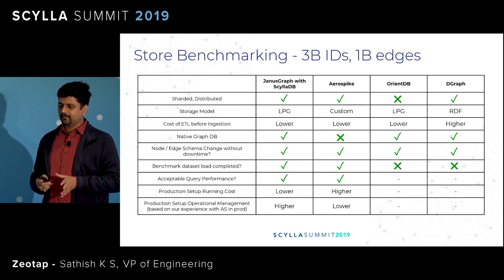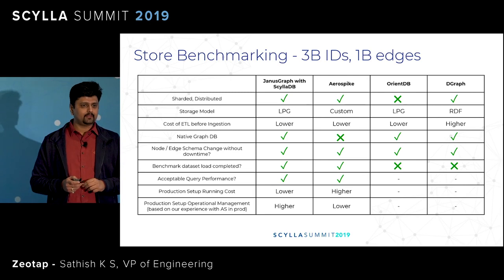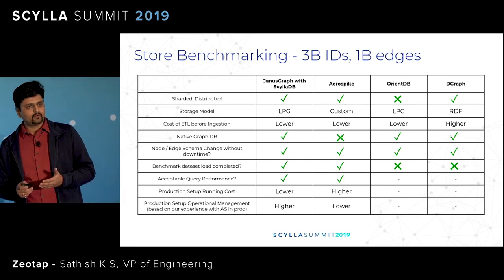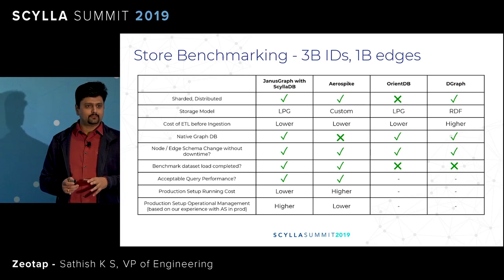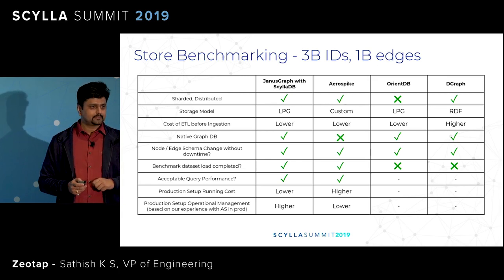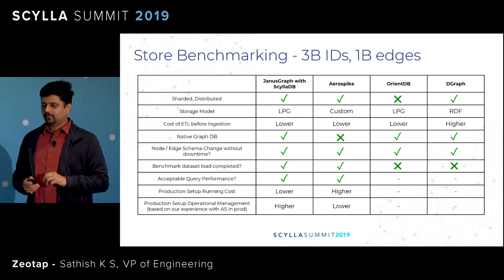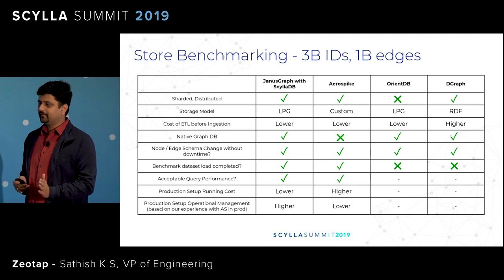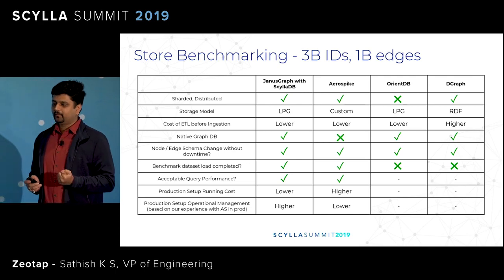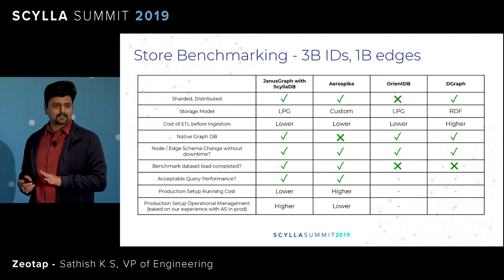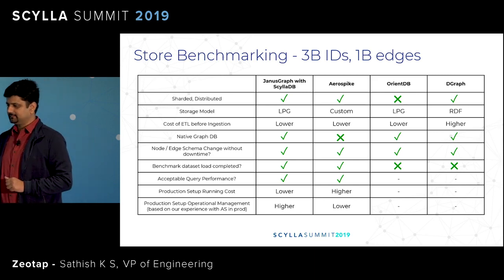A couple of design decisions that we found aligned with us at this scale, primarily being the label property graph model. Graph theory gives us two specific formats: label property graph model and RDF model of representation. We figured out that LPG works for us because in RDF, we increase the cardinality of data points because every edge there becomes a vertex. We were also looking at cost: an Aerospike-based solution would have been costlier — it's a memory-based KV with persistence, compared to a Scylla-based solution, which is a disk-based KV store. We finally found that the benchmark data was only getting fully loaded on Aerospike and JanusGraph, and given the lower cost of JanusGraph, we proceeded with JanusGraph backed by ScyllaDB.